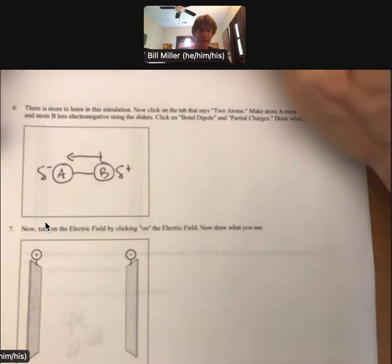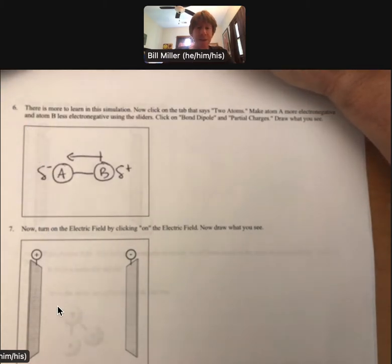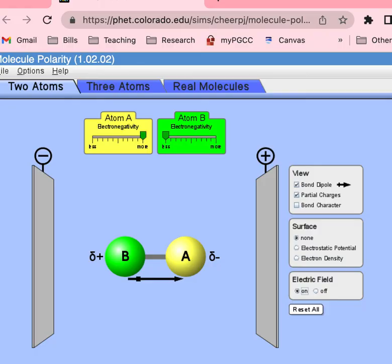Then you're going to draw for number seven. And as to the reason that the molecule moved, you could say a couple reasons. One is electrostatics as part of the reason, and the other is that positive and partial negative charges are attracted to each other.